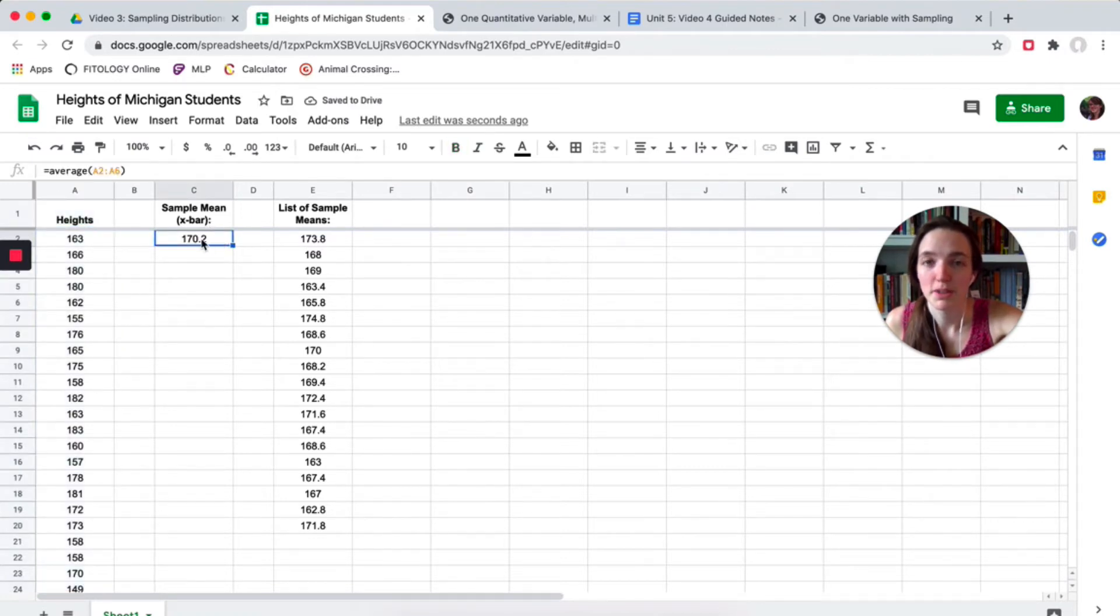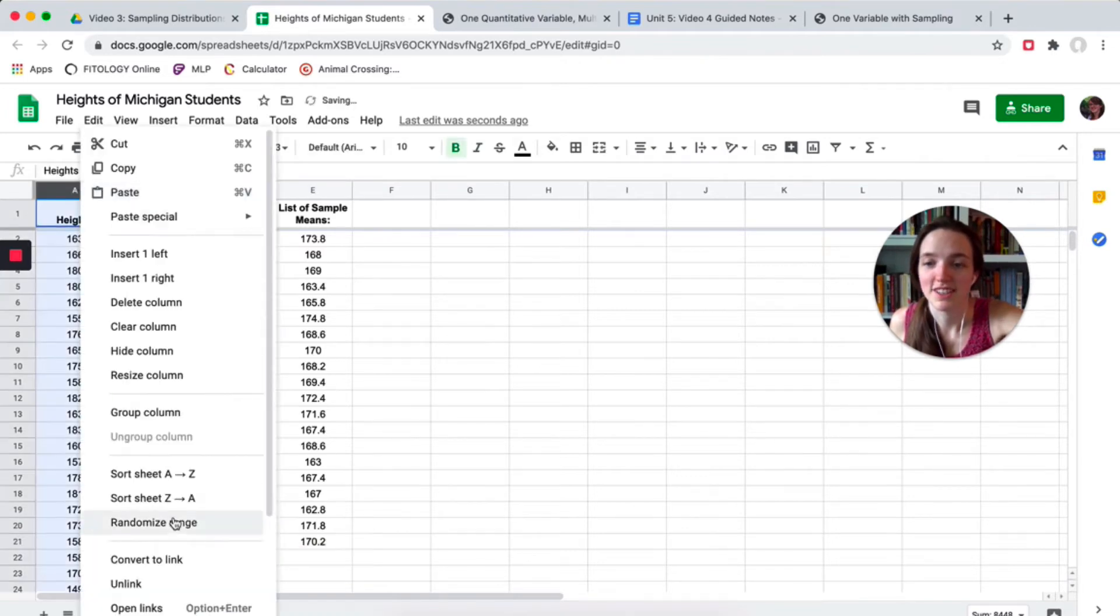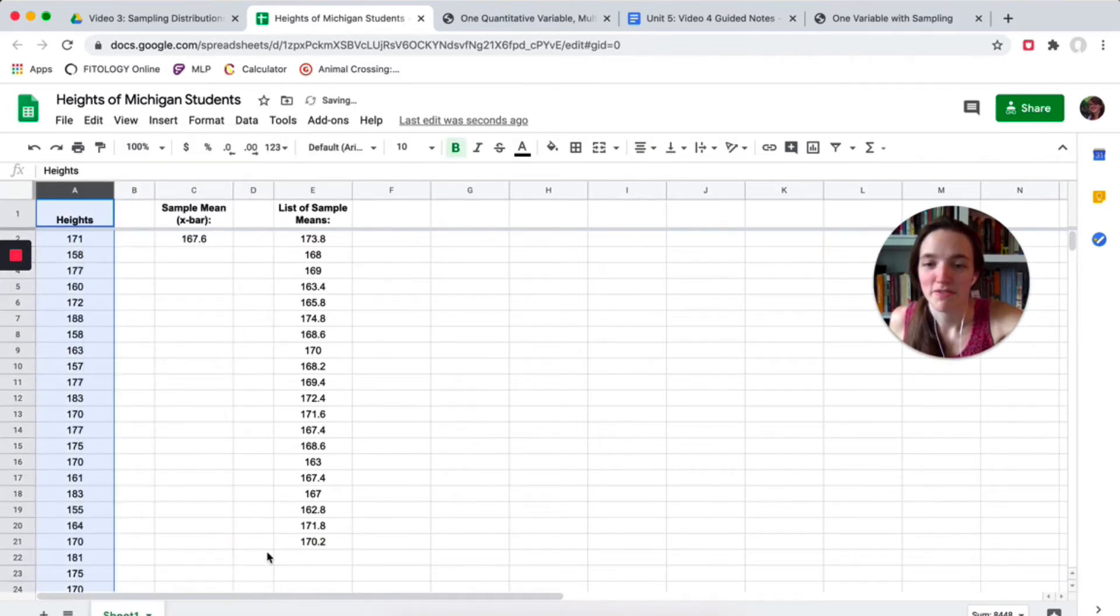This formula is calculating the average of A2 through A6, so the first five students. That's our sample of five, whoever shows up in the list first. So for this particular sample, the mean height, or x-bar, is 170.2. You just need to add that to your list. Don't copy-paste it, because it will change if you shuffle this again. So just type it. I want you to add at least five samples to the ones that I already have there, so at least five.